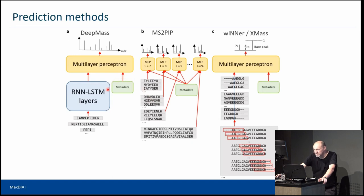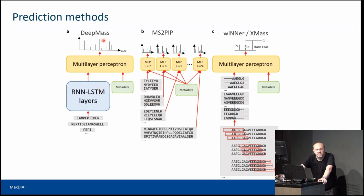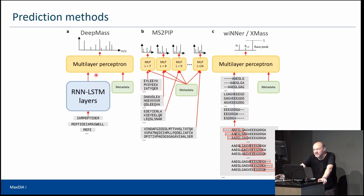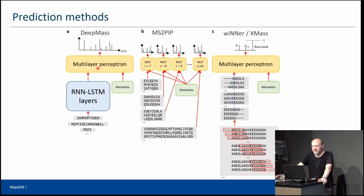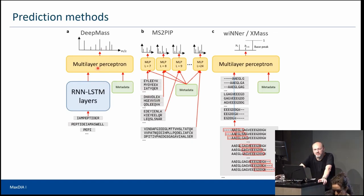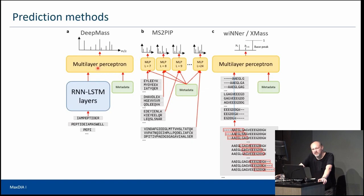One very favorable method is recurrent neural networks. One example is the DeepMass prediction algorithm developed in the lab, which is based on LSTM recurrent neural networks. This is a deep learning method that is probably best suited for these kinds of predictors — you get the best performance in terms of predictive accuracy and spectral correlation between predicted and experimental spectra with these deep learning approaches.